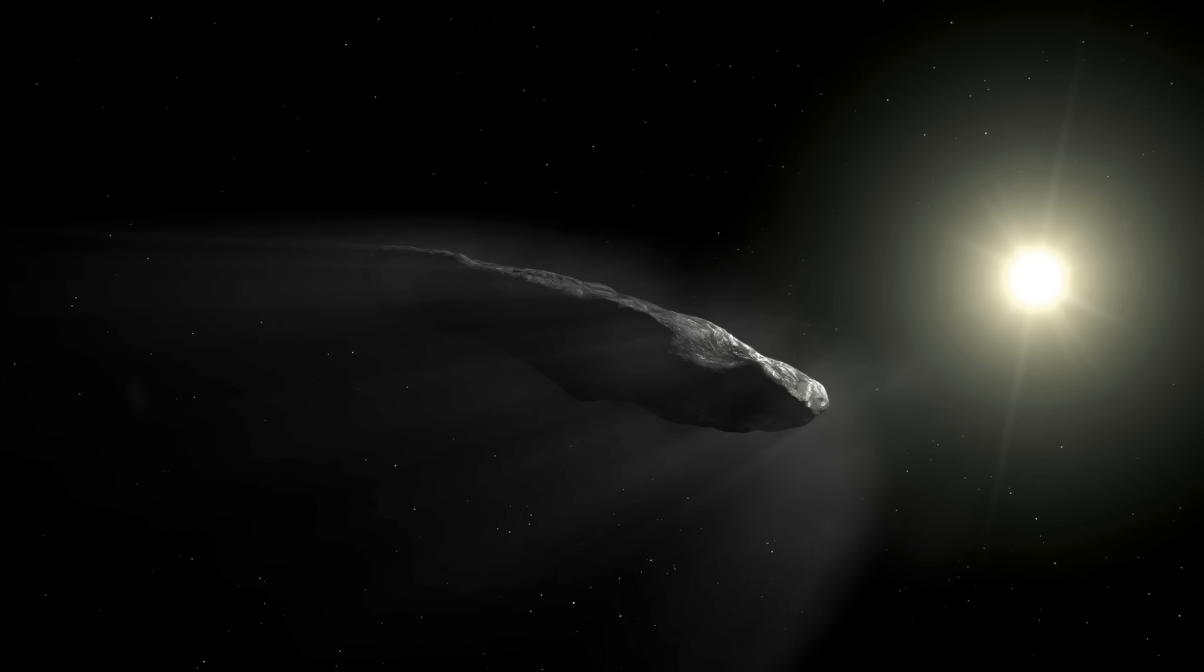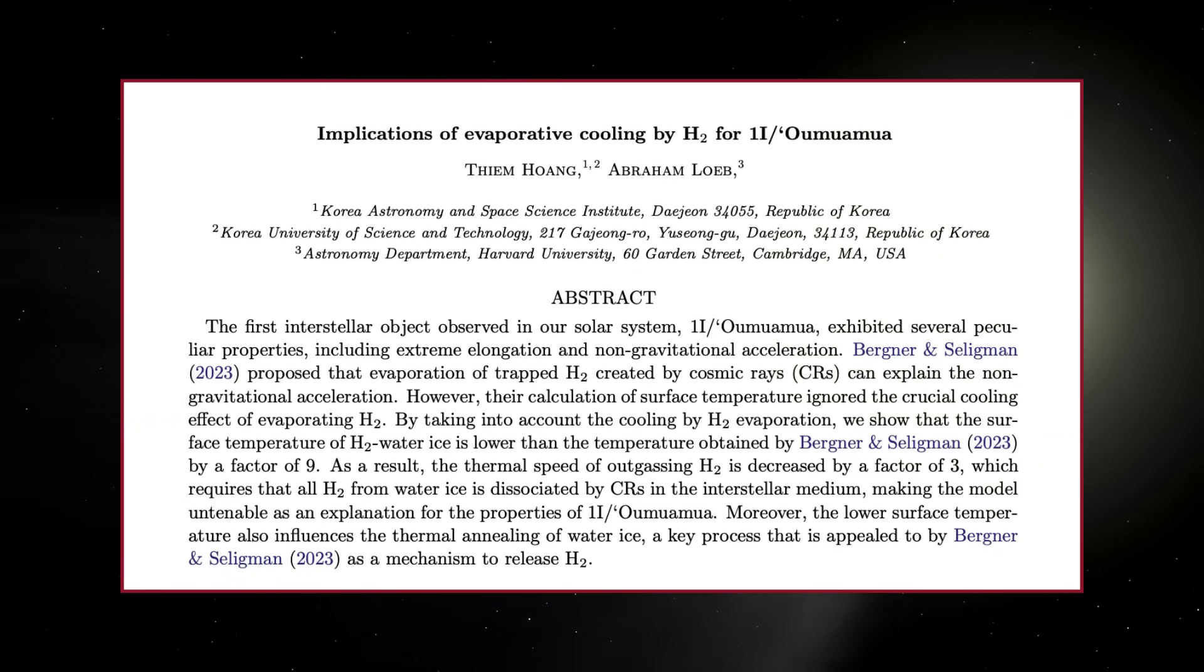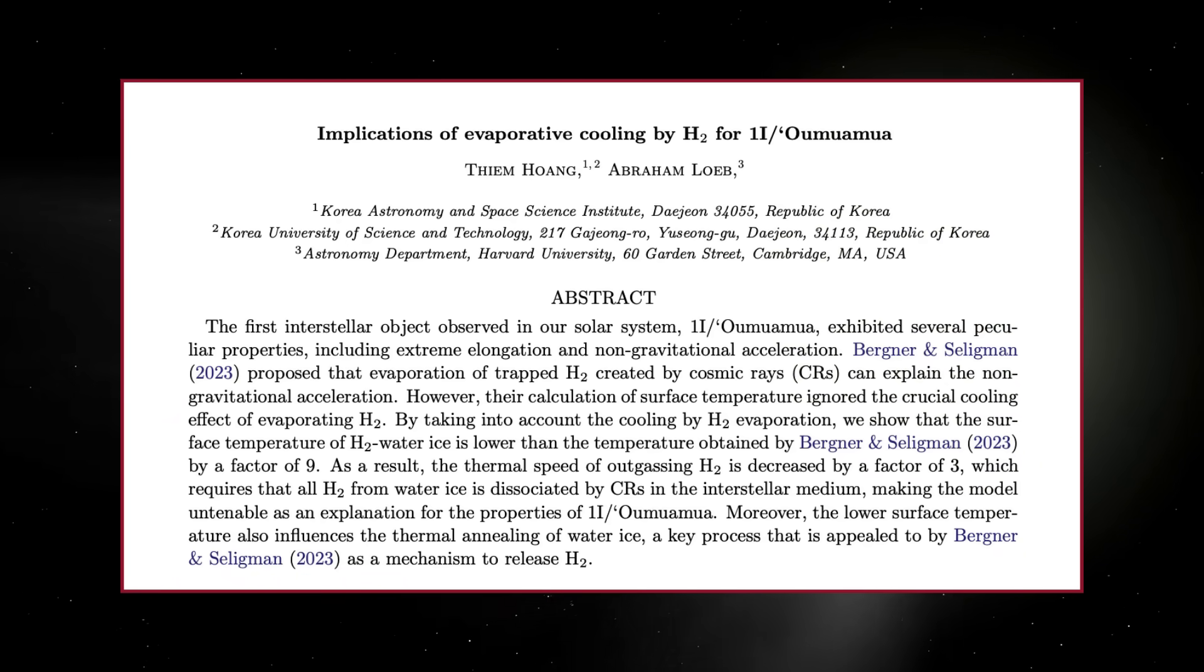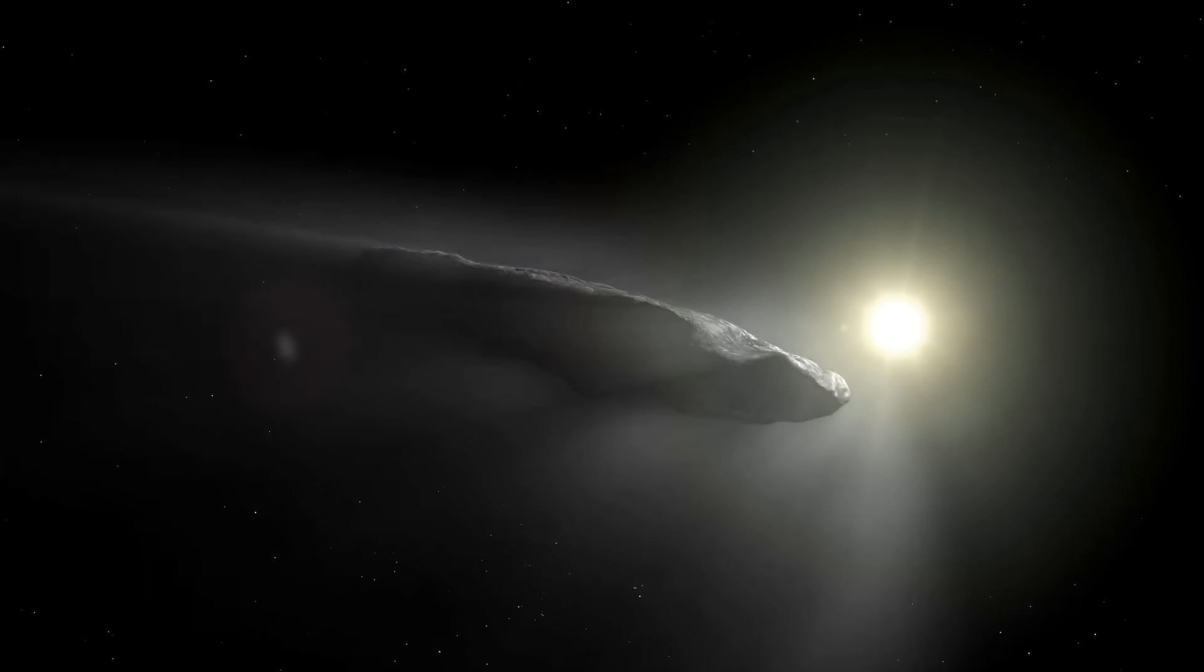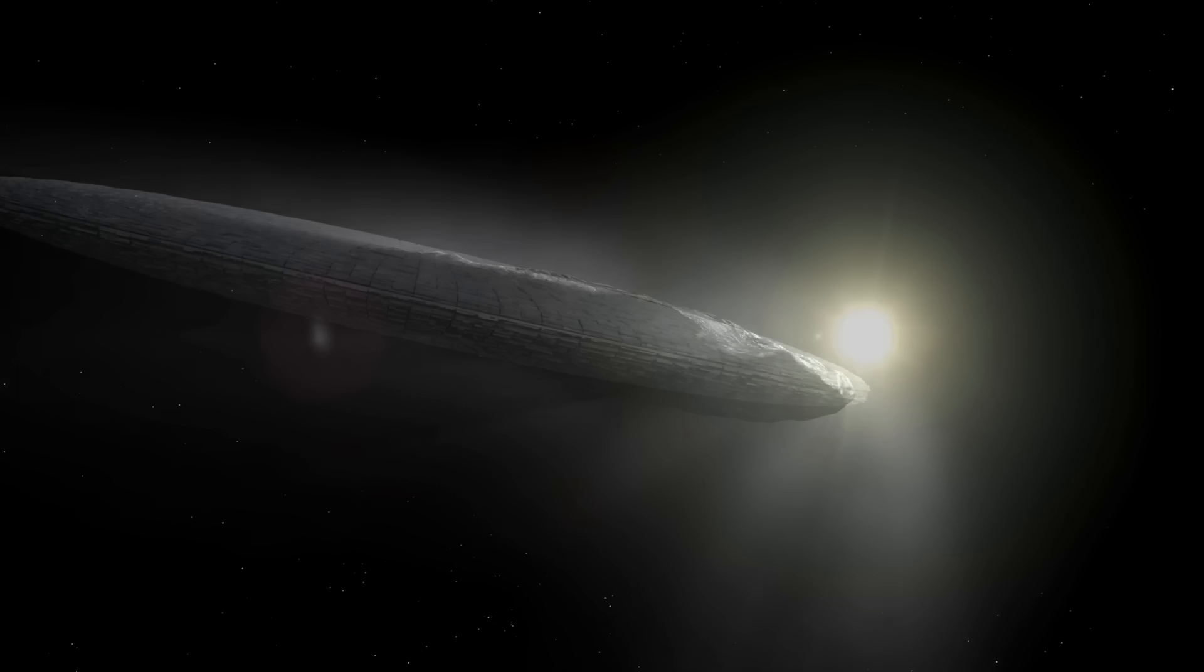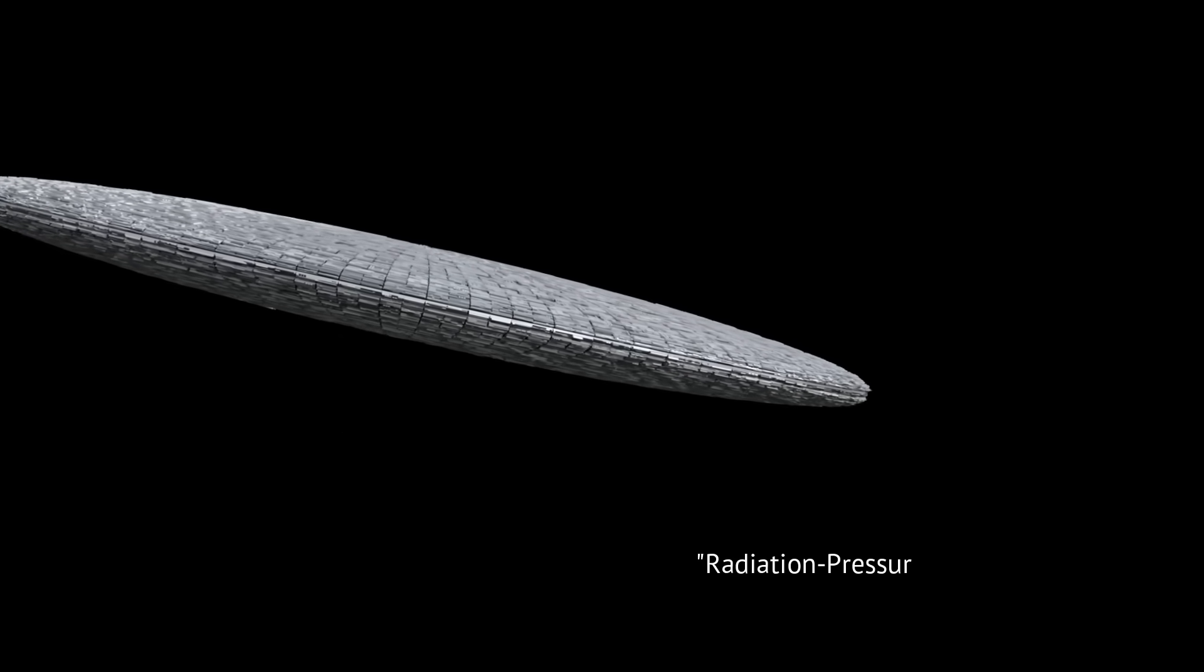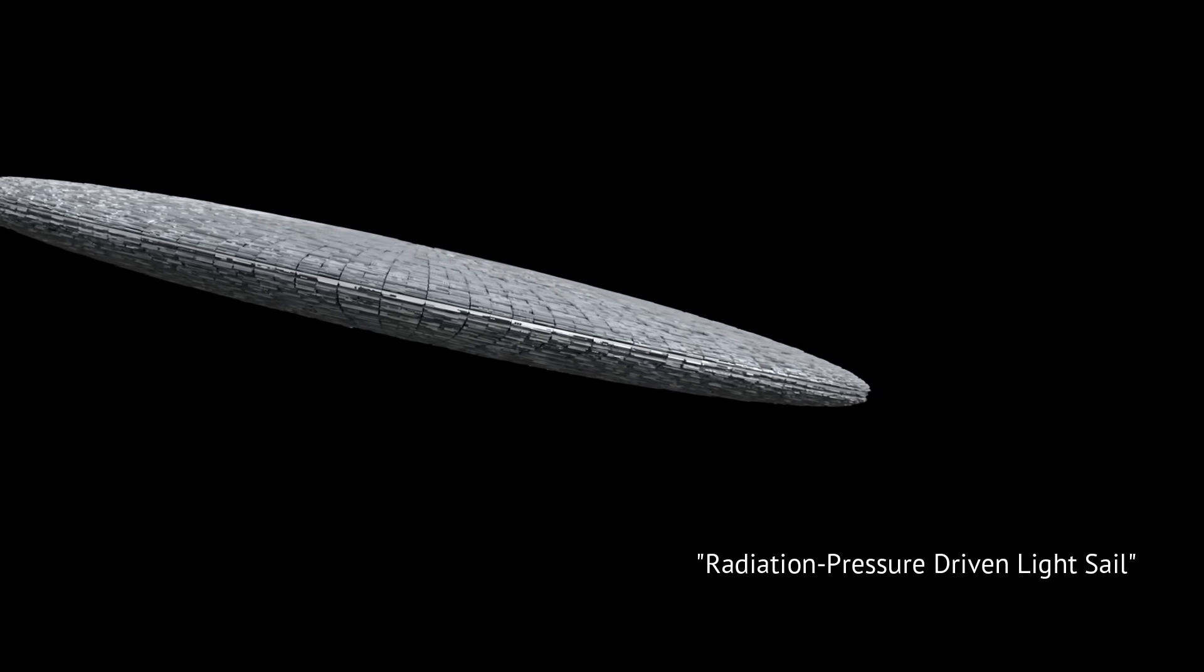However, Avi Loeb has remained publicly unconvinced by the dark comet idea. In a series of essays and follow-up papers, he's argued that the hydrogen ice model miscalculates how the surface cools as hydrogen escapes, and that the required outgassing would still leave detectable effects. In Oumuamua's case, he continues to press for a radiation-pressure-driven light sail instead.